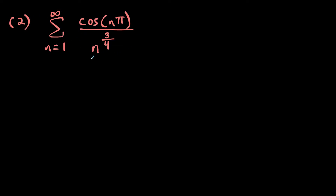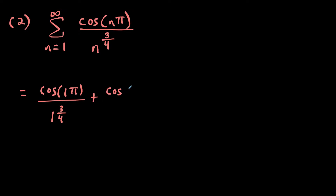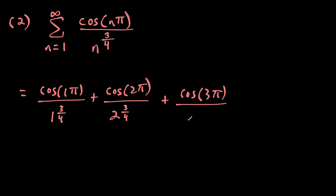For this next question with cosine n pi, the best thing to do is plug in values and try to rewrite this in terms of a different series. Plugging in: cosine of one pi over one to the three-fourths, then cosine of two pi over two to the three-fourths, cosine of three pi over three to the three-fourths, and so on.